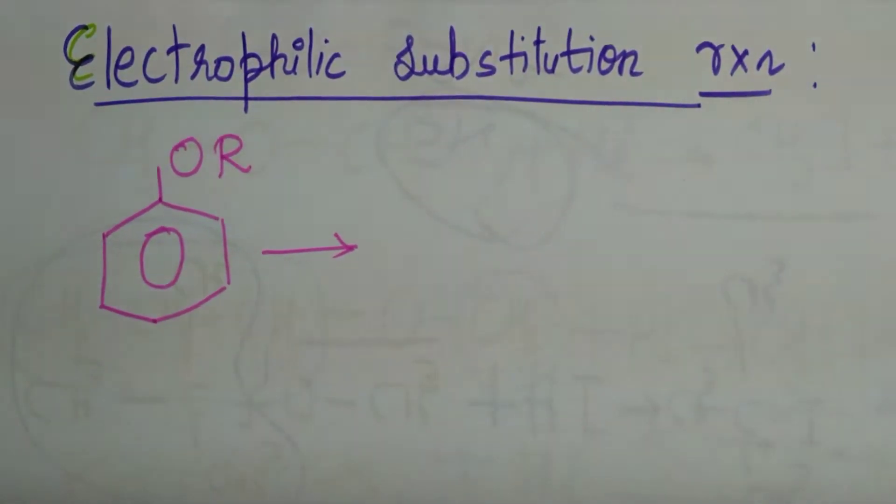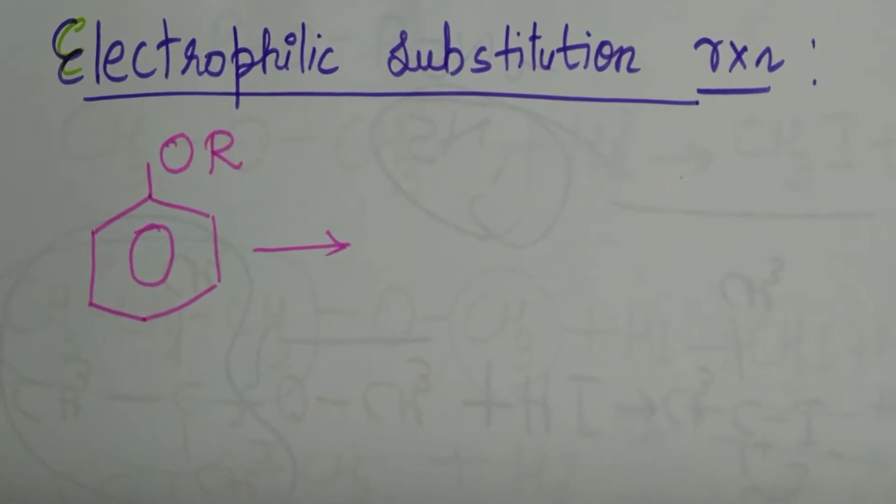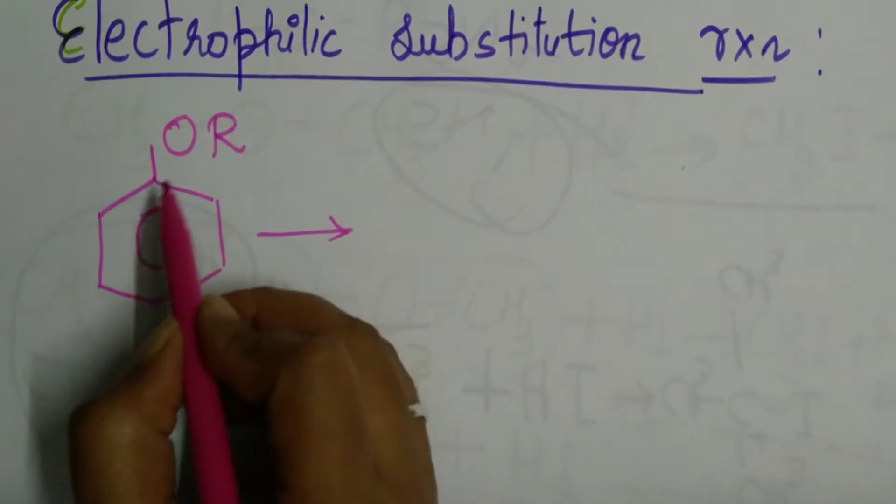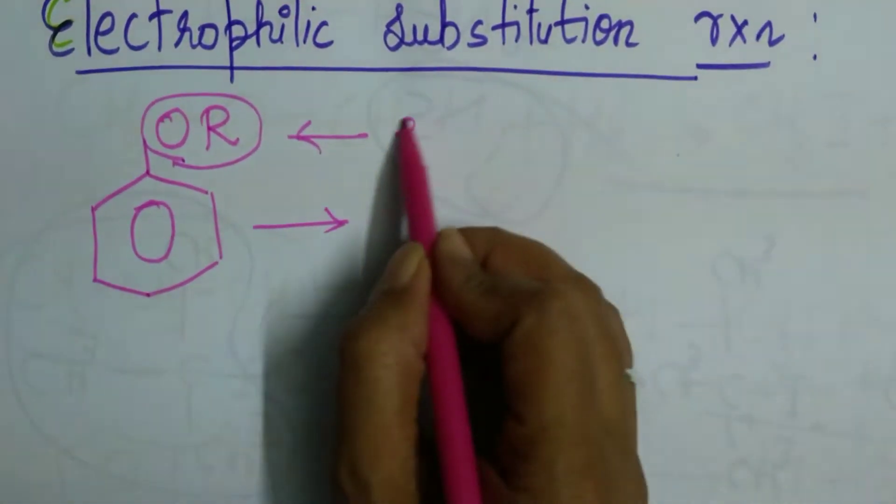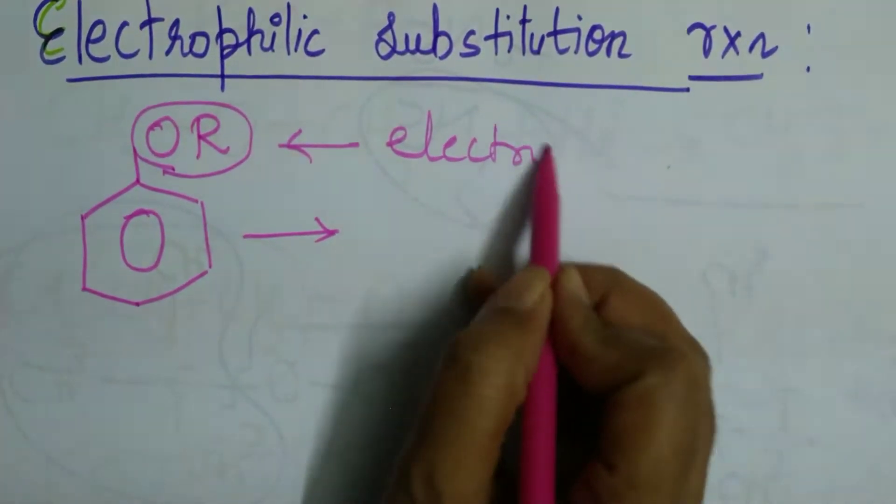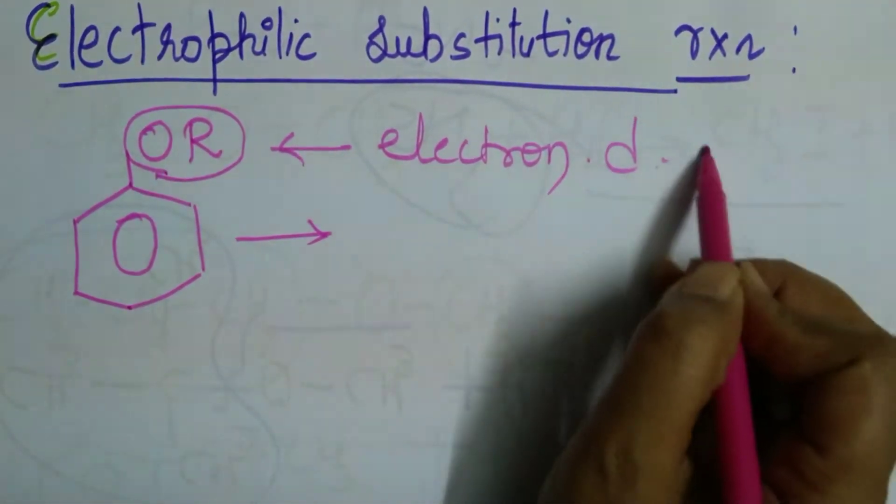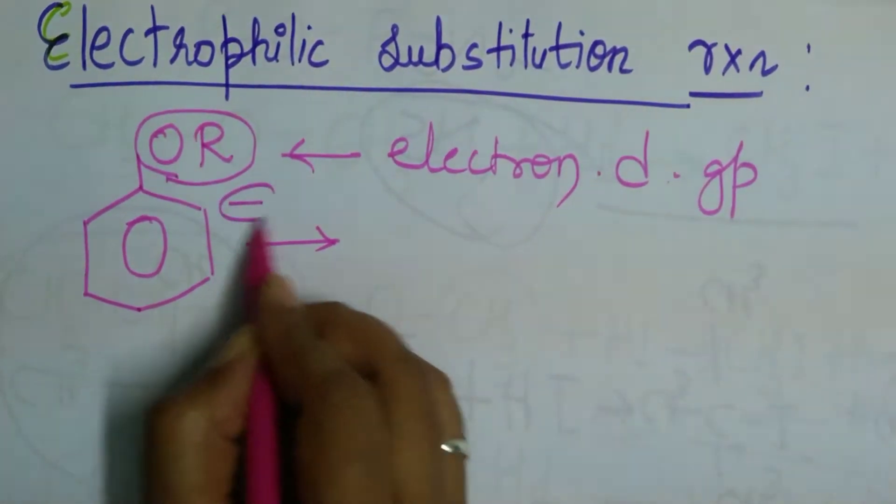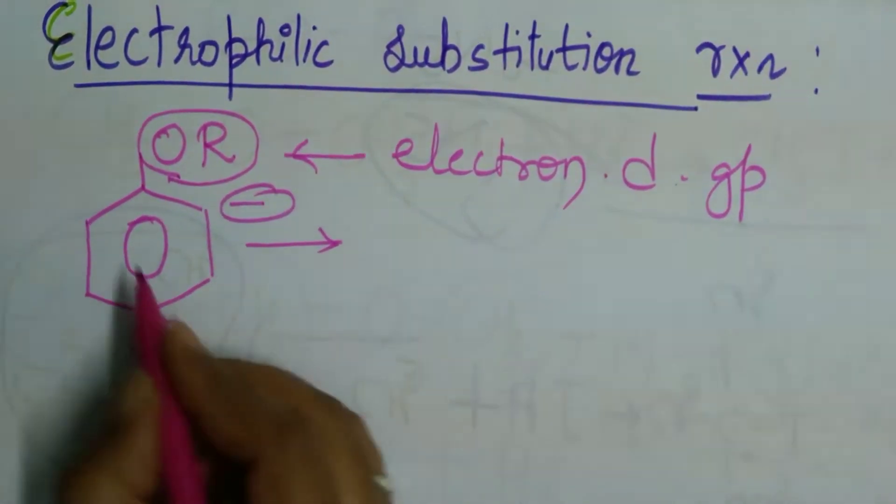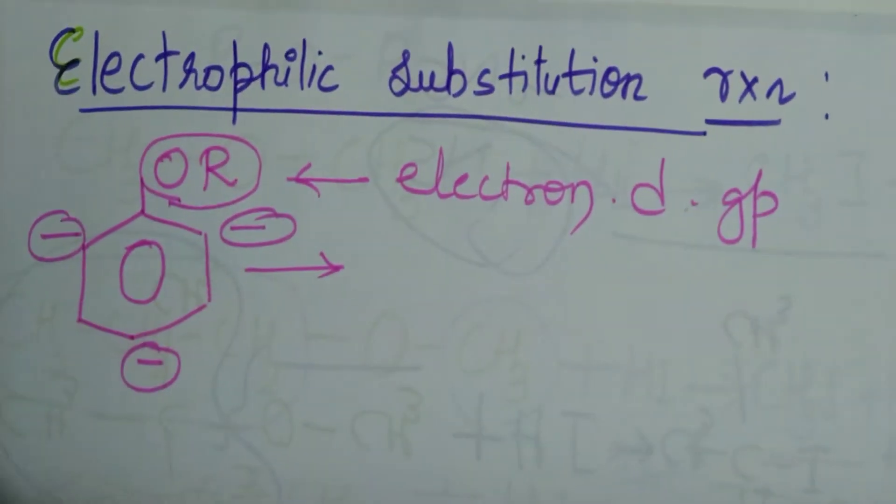Coming to Electrophilic Substitution Reactions in Aromatic Ethers. The alkoxy group in aromatic ethers is an electron donating group. Since it donates electrons, there is development of negative charge at ortho and para positions.